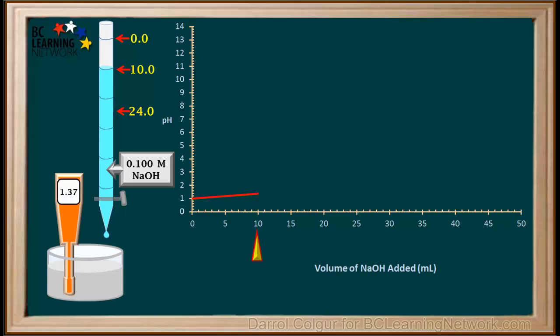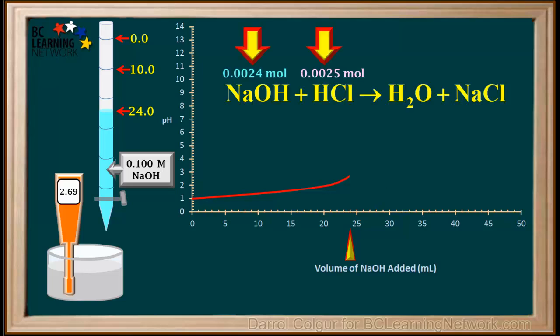Now we'll add more NaOH to the beaker until we get to a volume of 24 milliliters of NaOH added. The pH at 24 milliliters has gone up to 2.69 — notice it is starting to increase at a faster rate. Calculations show that we've now added 0.0024 moles of NaOH to 0.0025 moles of HCl. The acid is still in excess, but not by as much as before, so the pH is higher.